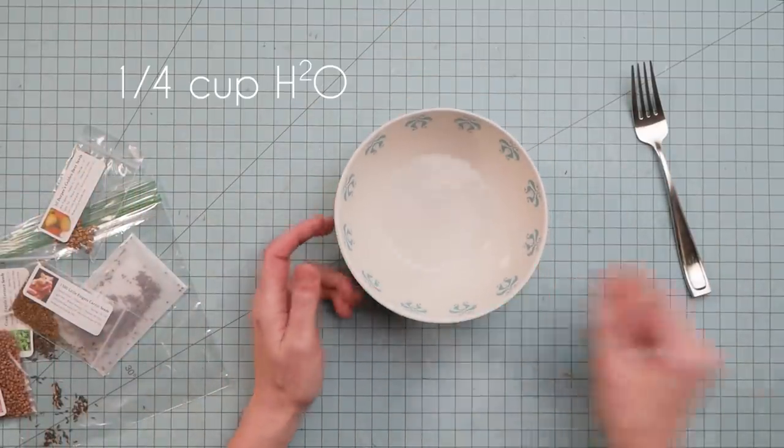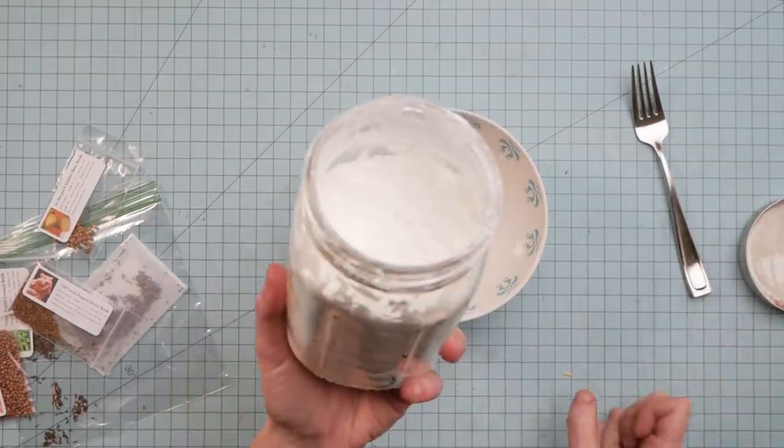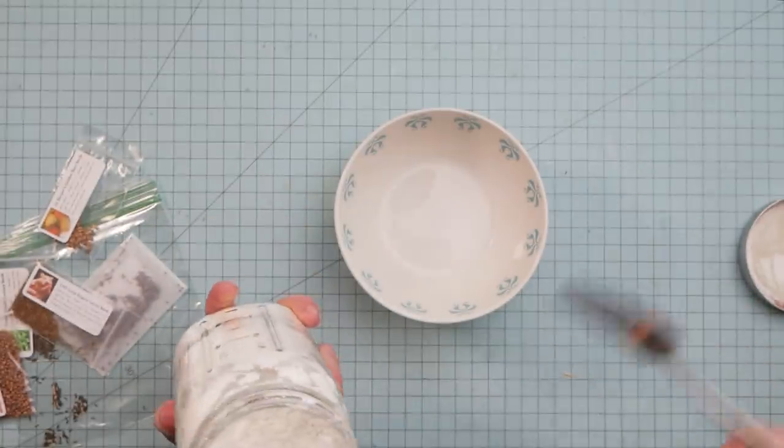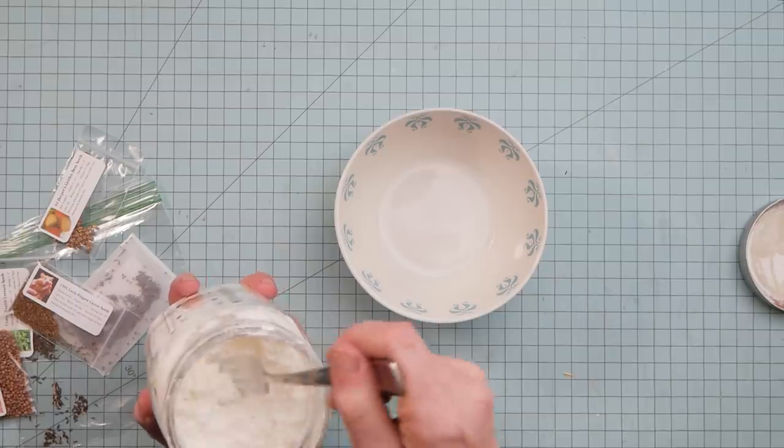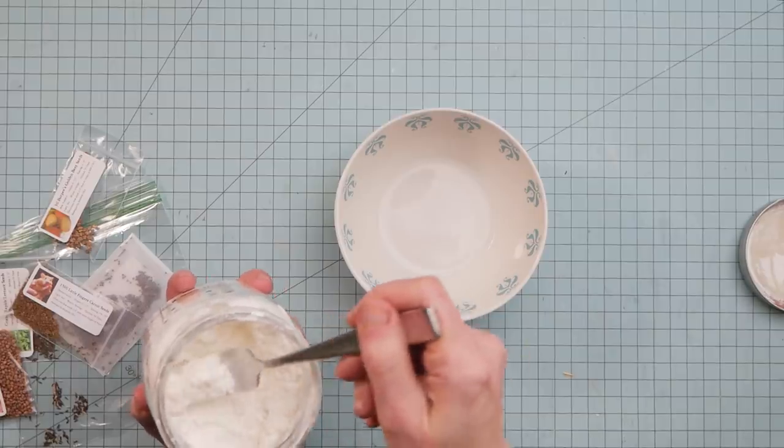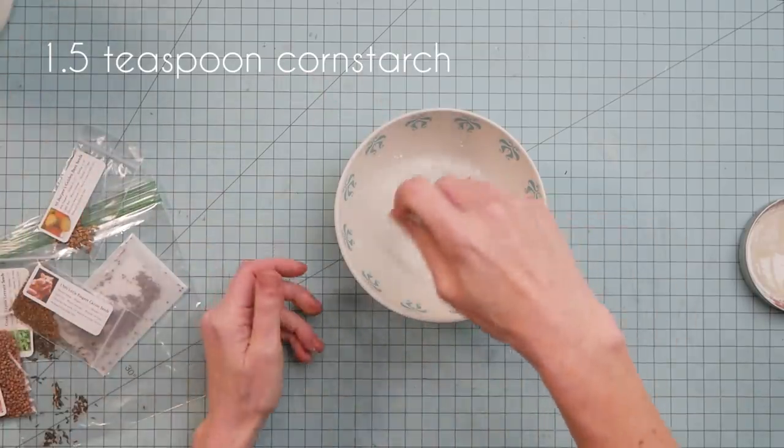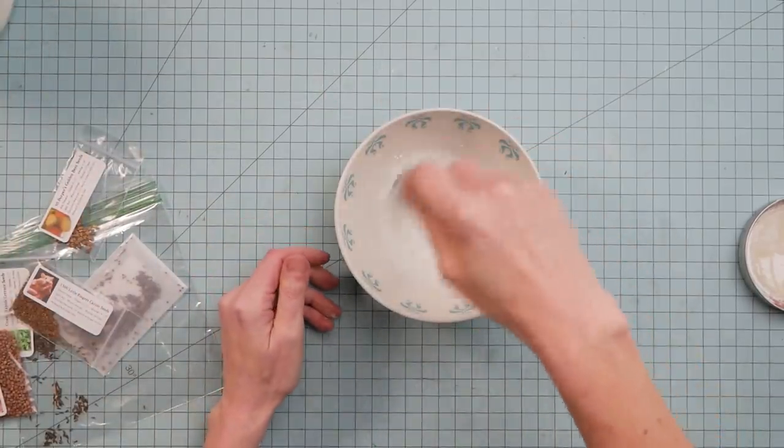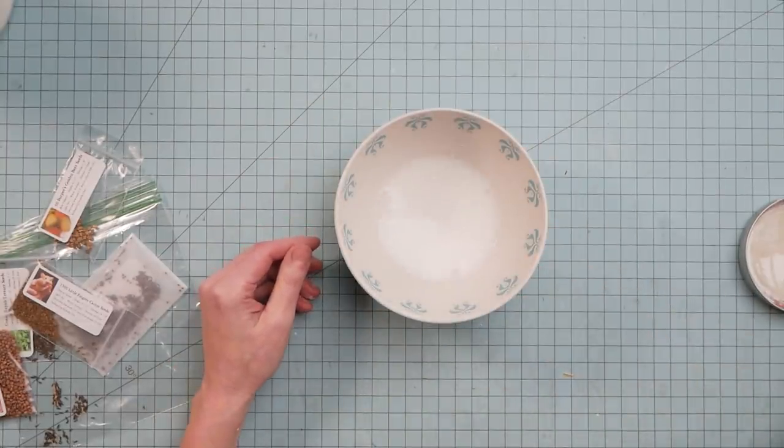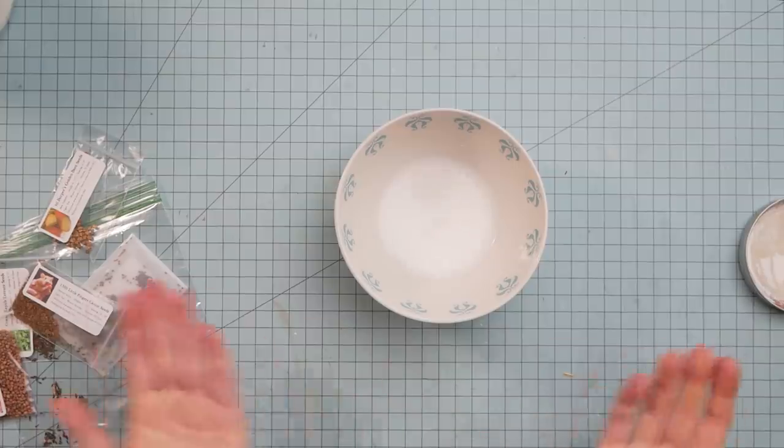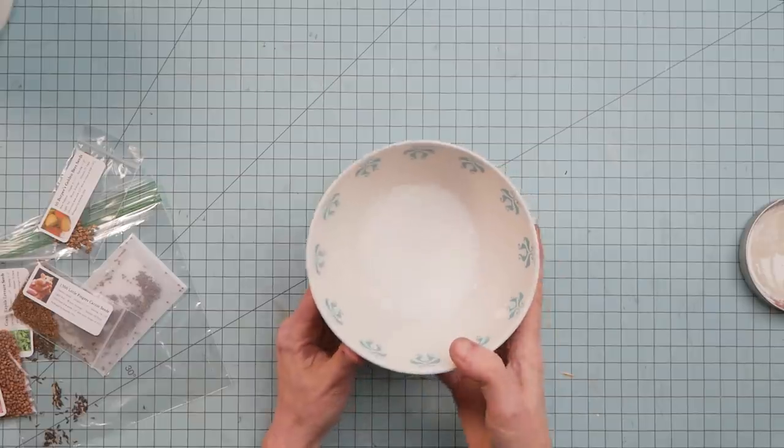In this little bowl, I have about a quarter cup of water, just regular tap water. And this is my jar of cornstarch. To this quarter cup of water, I put about a teaspoon and a half. I stir that up real well, and then this gets popped into the microwave for 20 to 30 seconds.